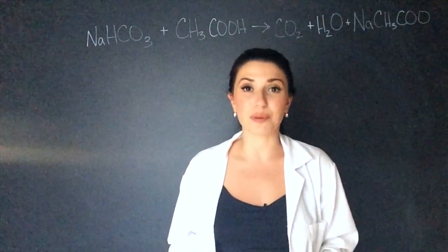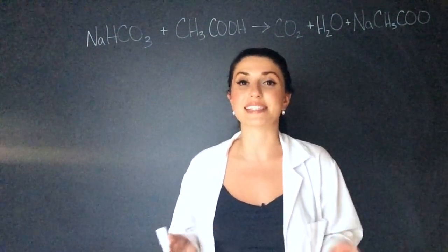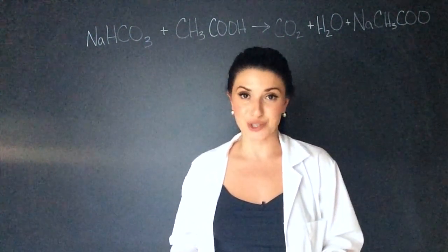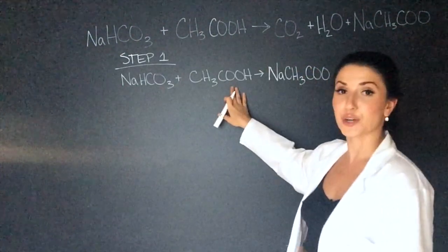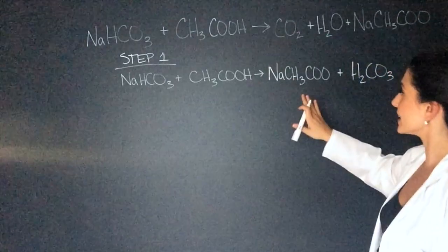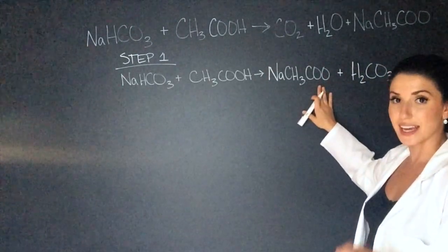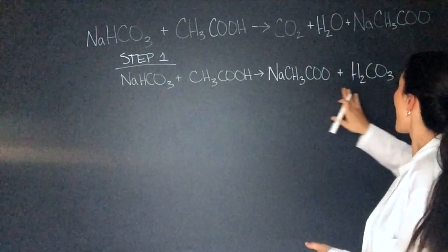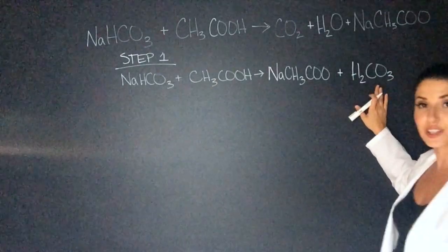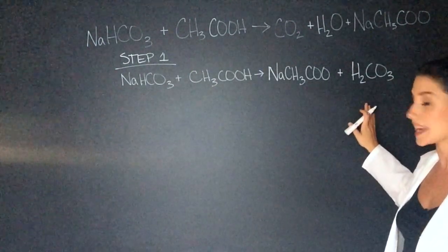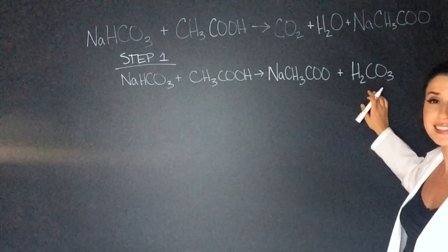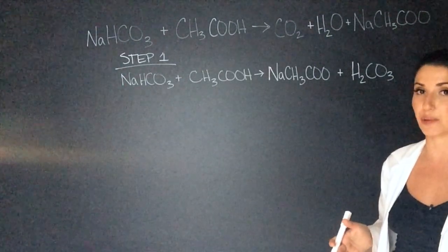The first is a double displacement reaction and then the second is a decomposition reaction. So in step one we have the baking soda and vinegar reacting and then that gives us the sodium acetate aqueous solution and then this weird acid called carbonic acid. Now the reason this has a second step is because carbonic acid is extremely unstable on its own.